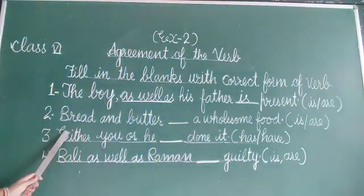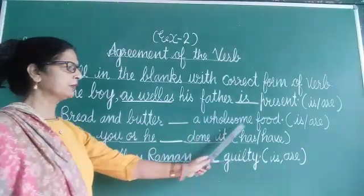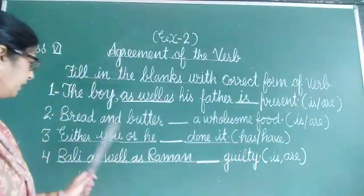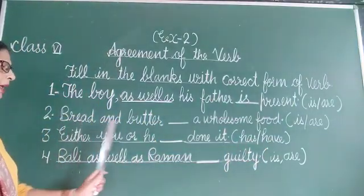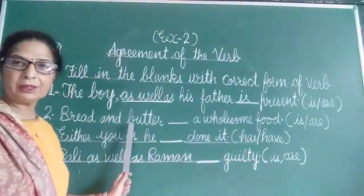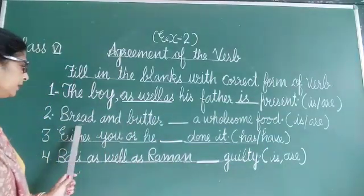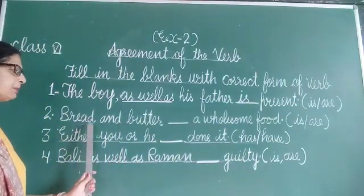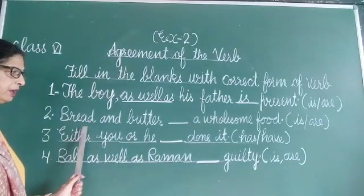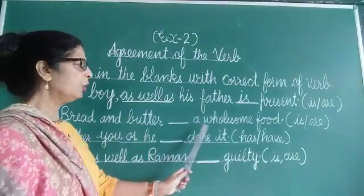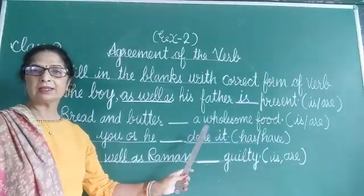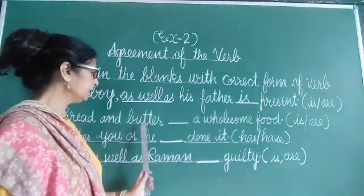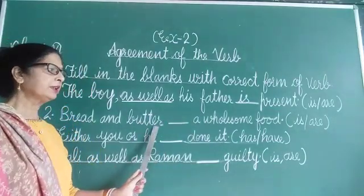Next is: bread and butter __ a wholesome food. The options are 'is' and 'are'. If we see, bread and butter are both separate objects. But here in this sentence when they are joined, when butter is applied on bread, it gives a wholesome food. It gives a complete sense and shows the singular form.